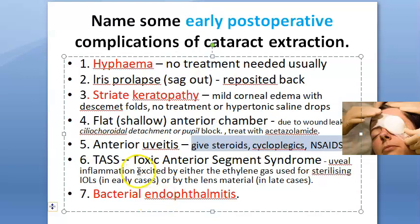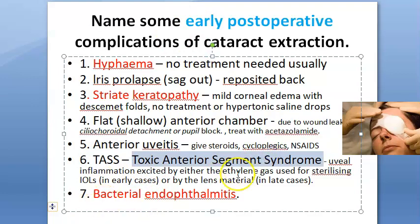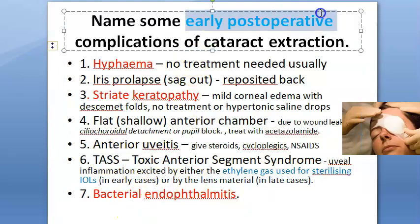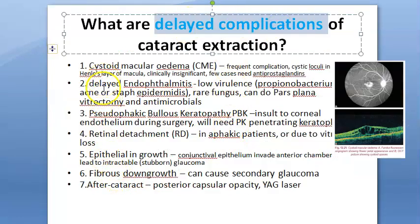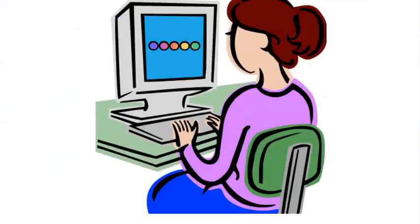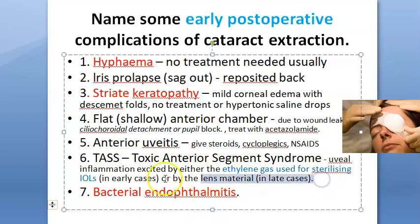Toxic anterior segment syndrome (TASS) can occur as a complication. In early cases, this inflammation is excited by the ethylene gas used to sterilize IOLs. In late cases, TASS can be caused by the IOL lens material itself. So TASS can appear in early post-operative and also in late post-operative stages.